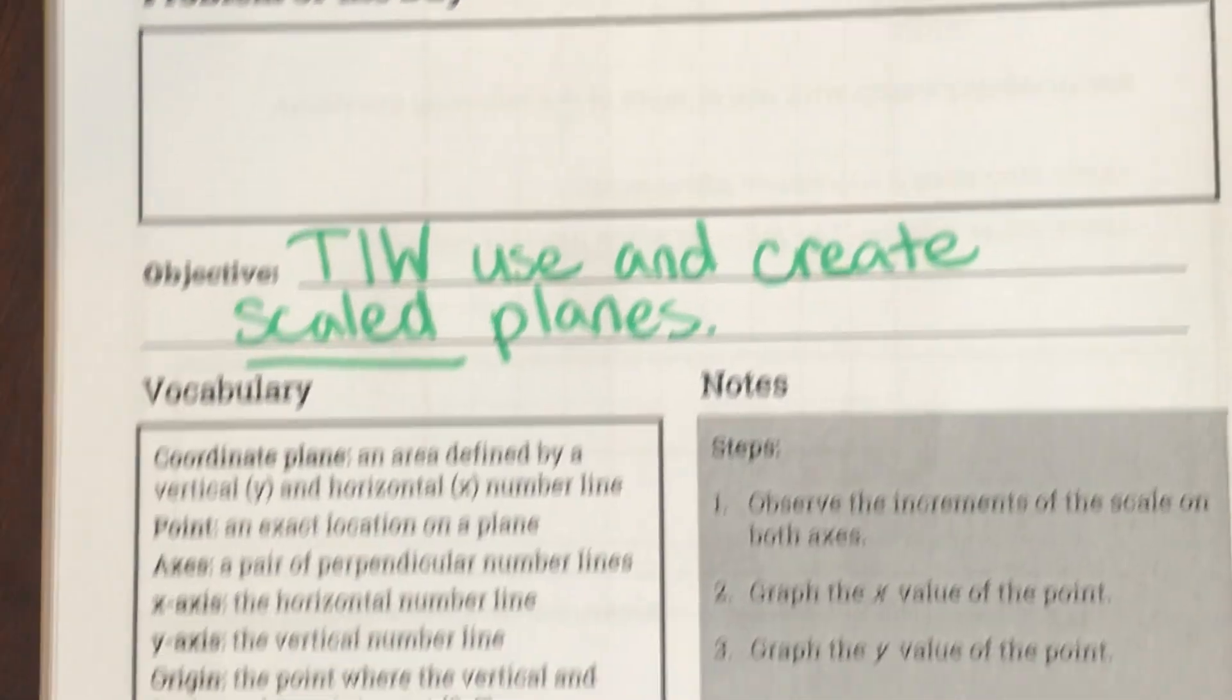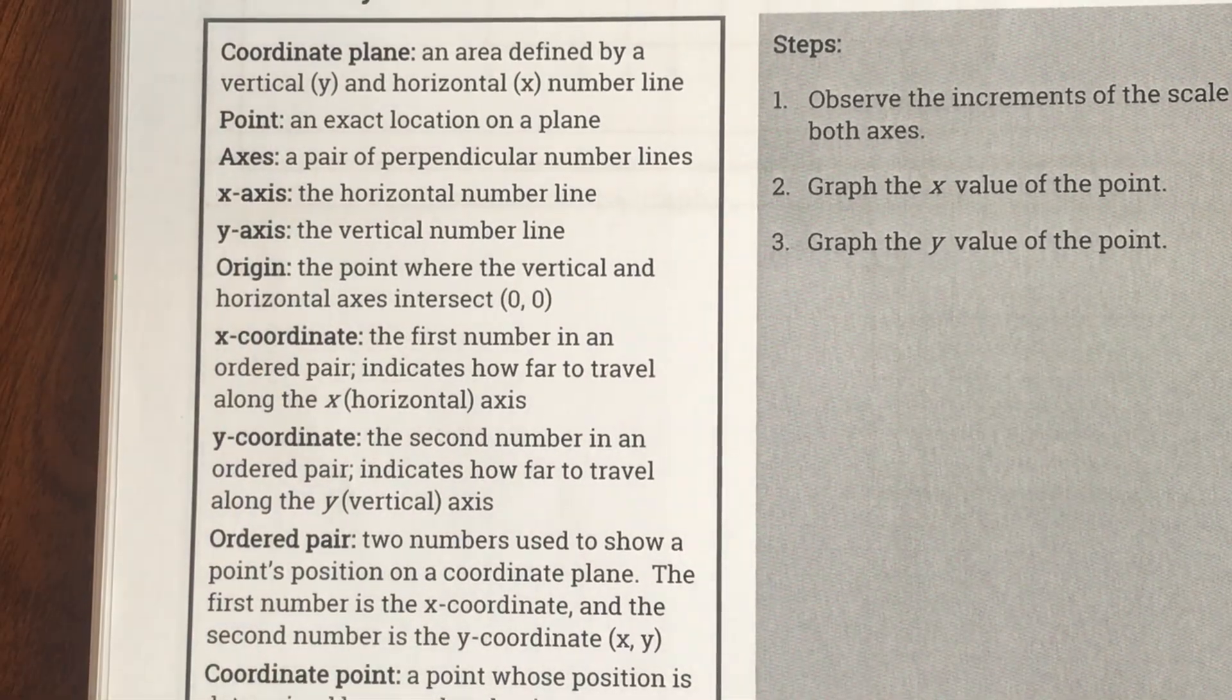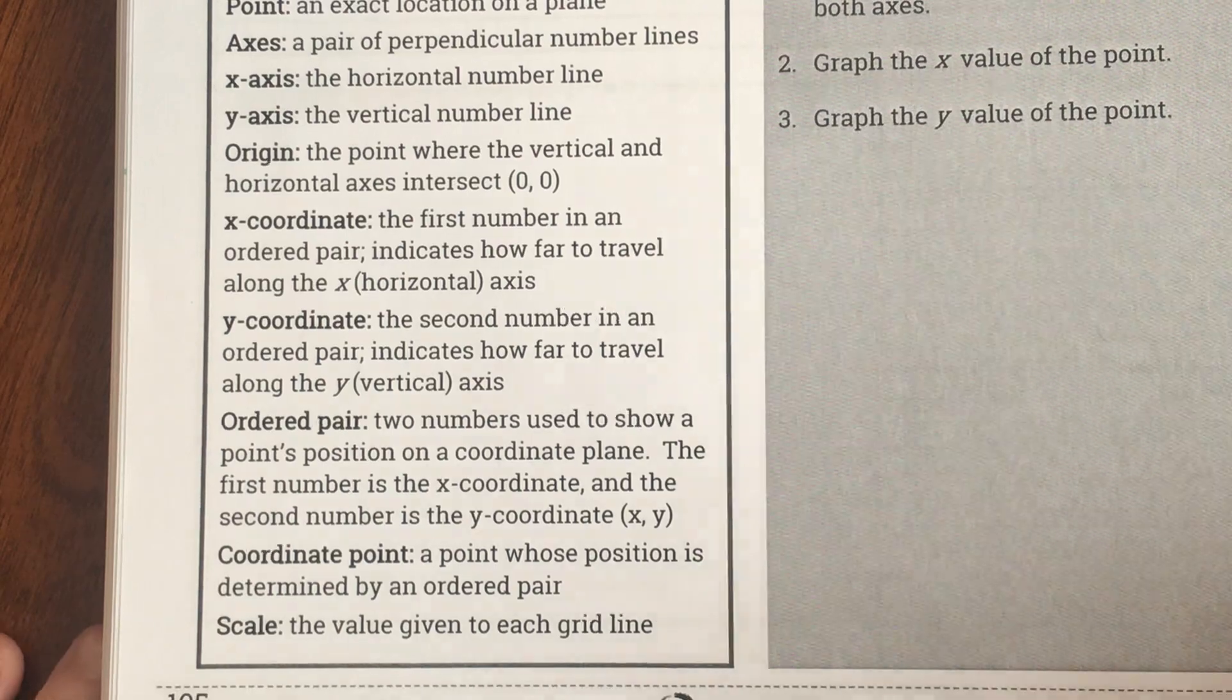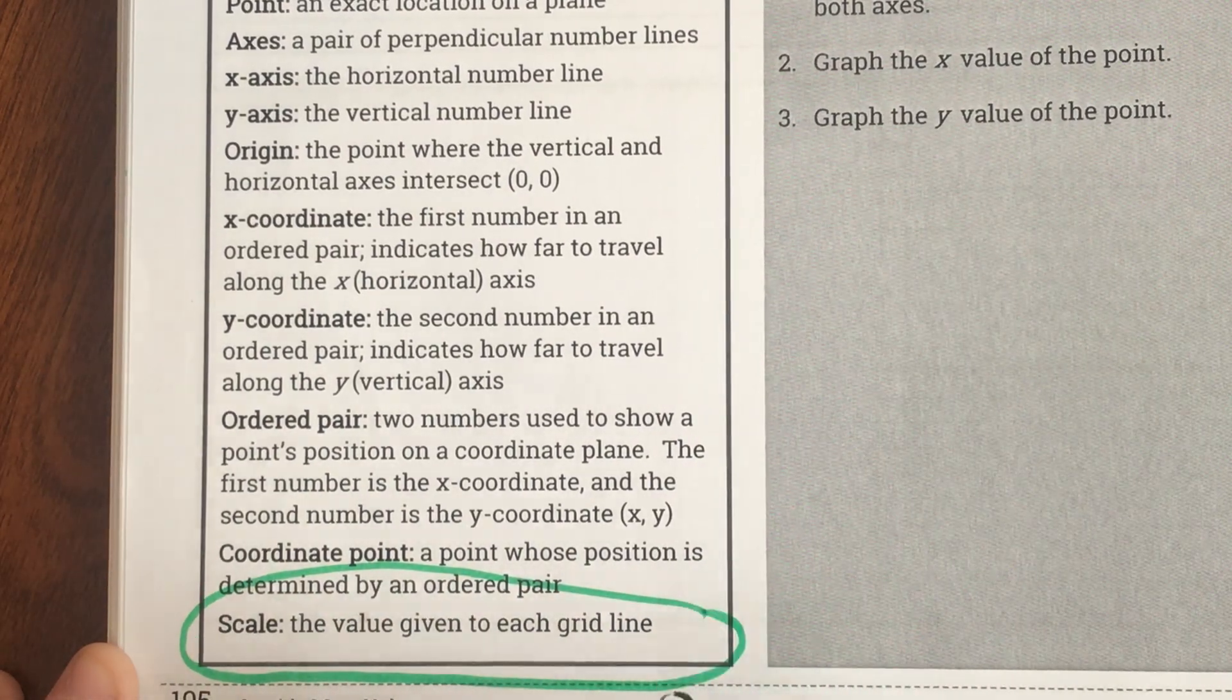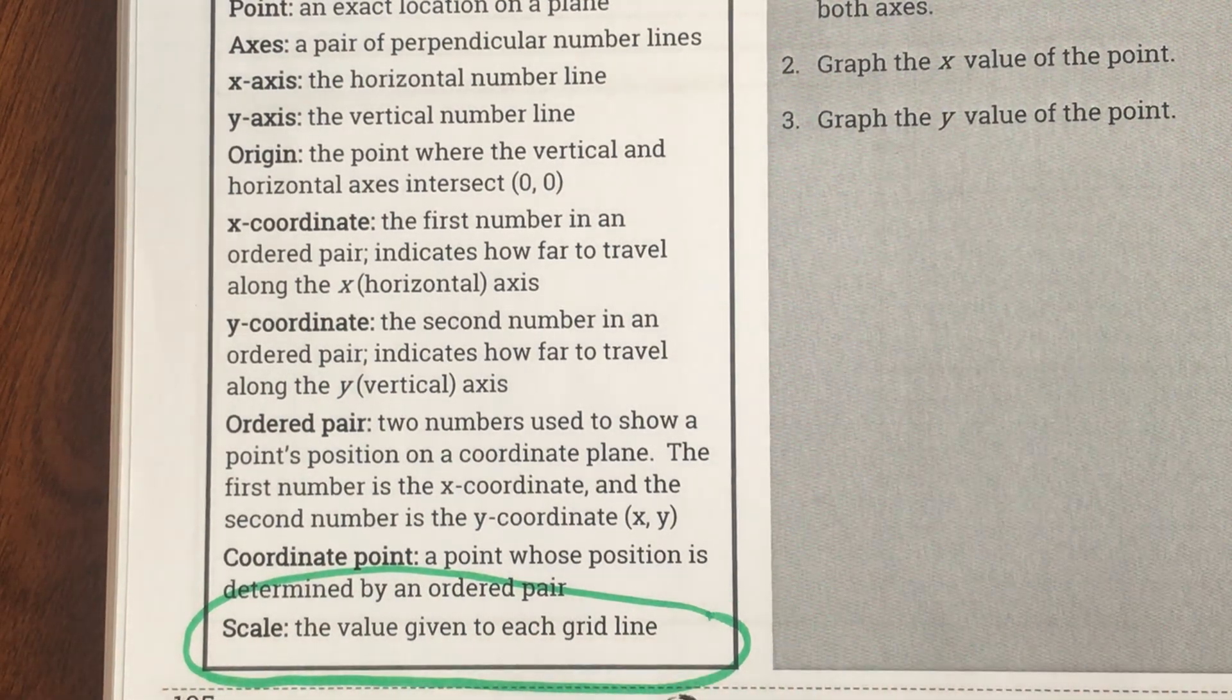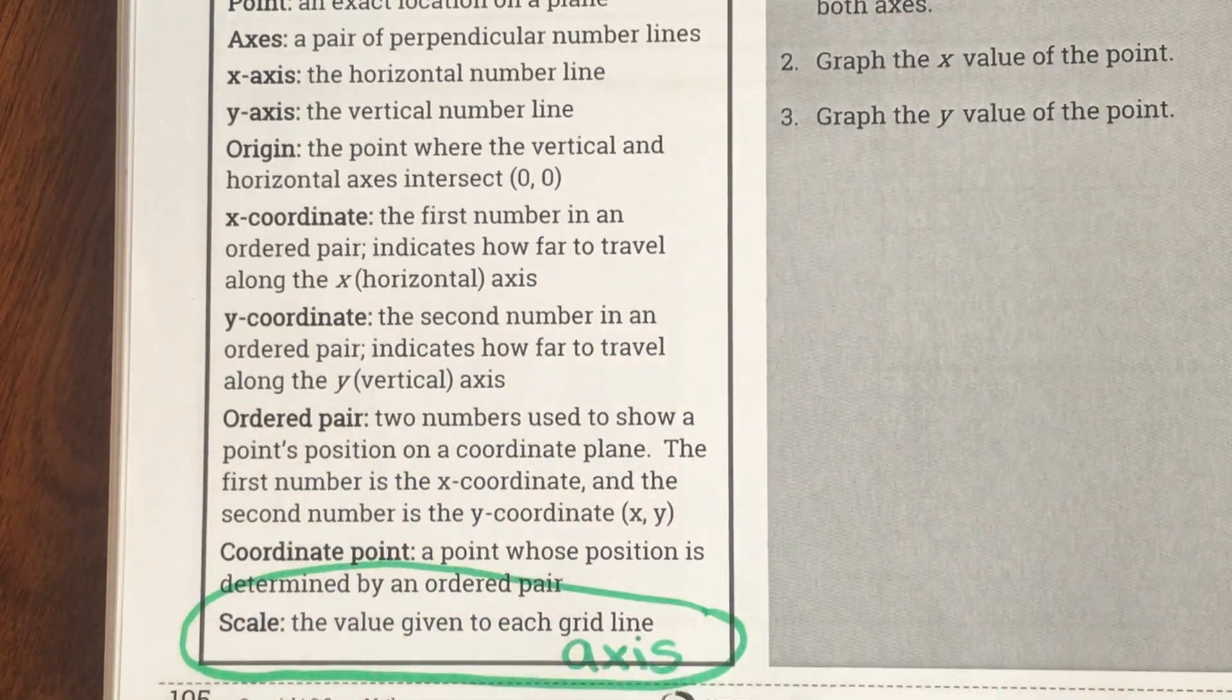Yesterday we introduced tons of new vocabulary. I'm not really going to go over all of it again because we're just going to be using it, but I am going to point out our new one. It says scale: the value given to each grid line. When it says grid line, we might want to add the value given to each axis.